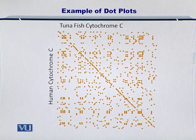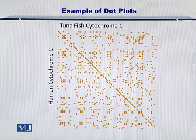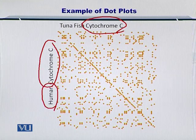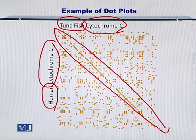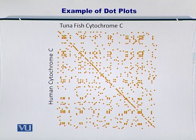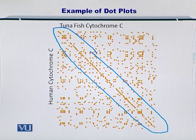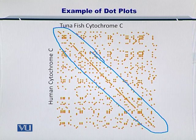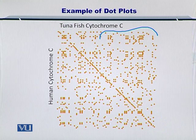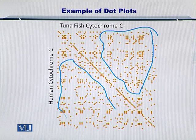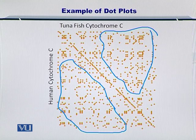Here I'm giving you a dot plot for cytochrome C from tuna fish and humans. As you can see, the cytochrome C molecule from these two species is very nicely aligned, which is shown by this very long diagonal that is visible on the plot. This is one of the beauties of dot plots — you can simply visually inspect the alignment. However, there are dots beside the diagonal which are matching amino acids but are not diagonally connected to others, so they can be treated as noise.